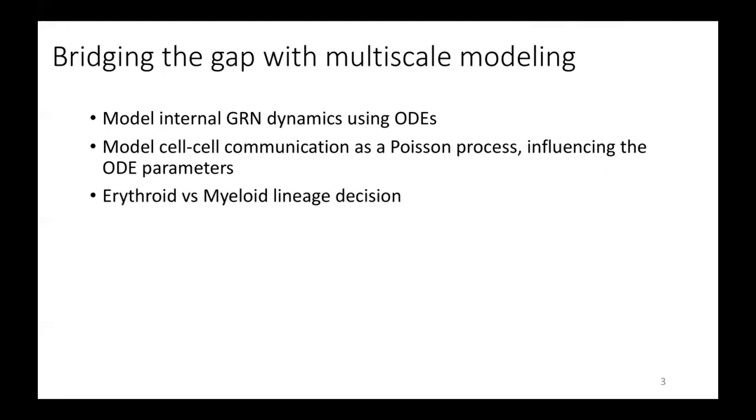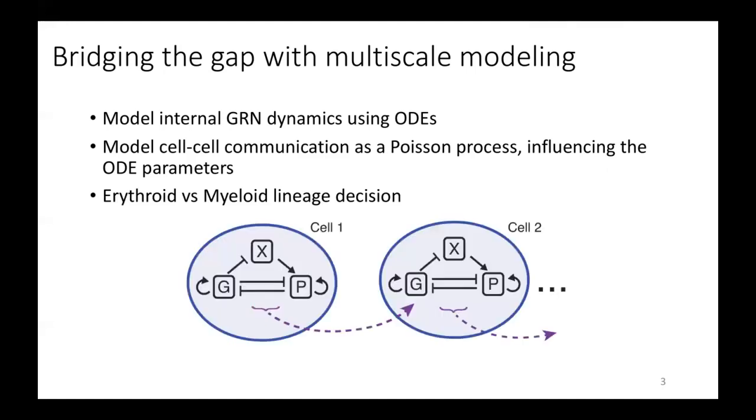In particular, we're going to look at the erythroid myeloid lineage decision in hematopoiesis. So this is a schematic of what our model is going to do. So within each cell,